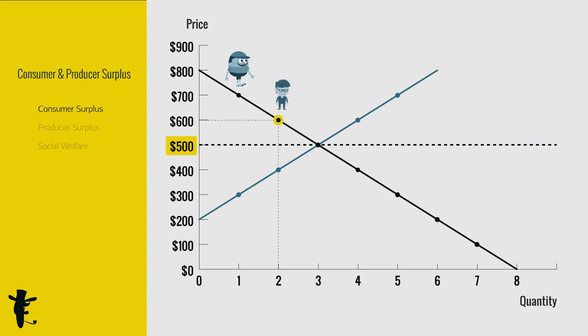Then another guy is willing to pay $600. His surplus is lower, at $100. And of course, you have a guy who's only willing to pay $500. His surplus is zero.